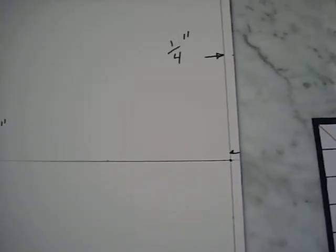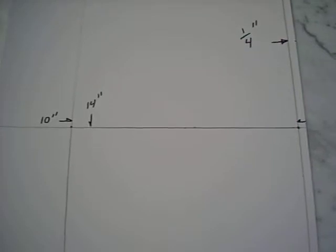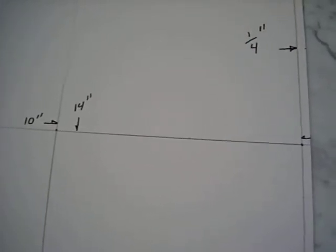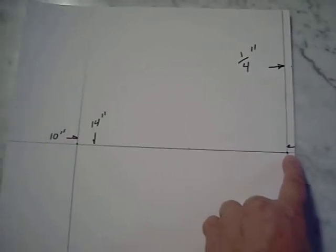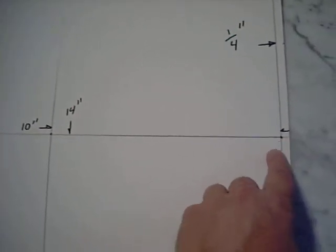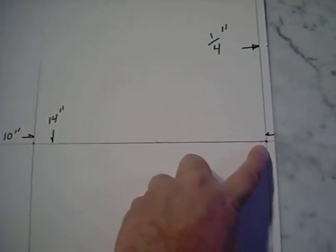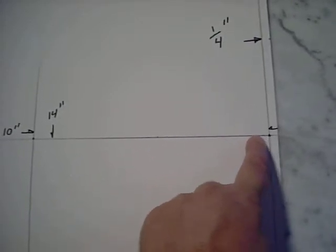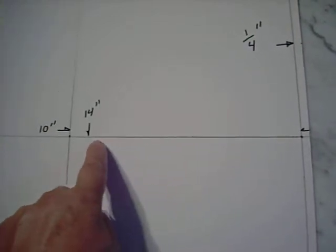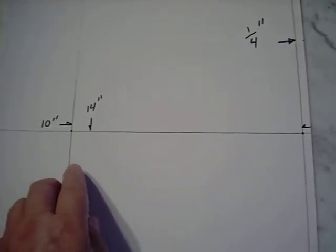Then you want to extend from your one side of your tag board from the inner edge of the quarter inch, not from the edge. From a quarter inch over, that's zero. And you want to go ten inches out and make little marks.